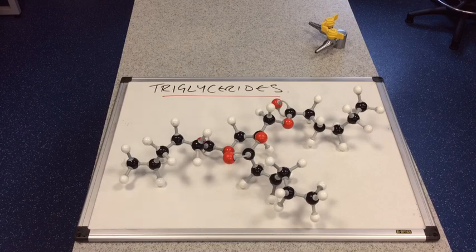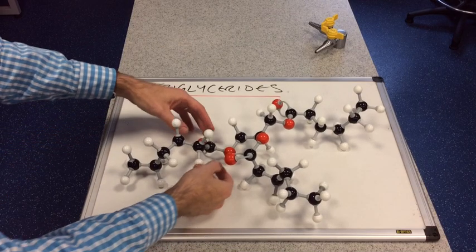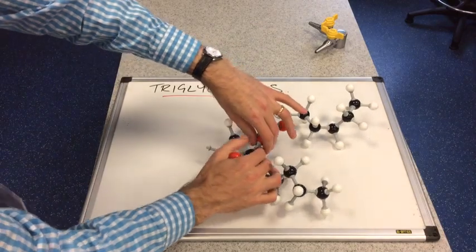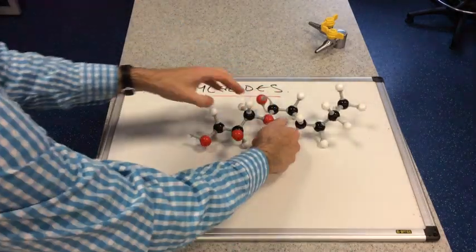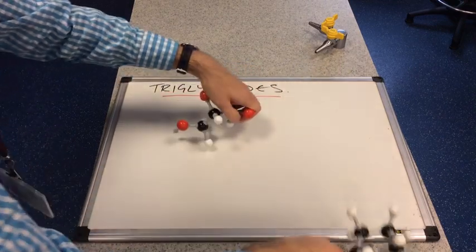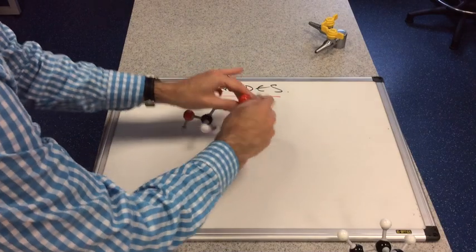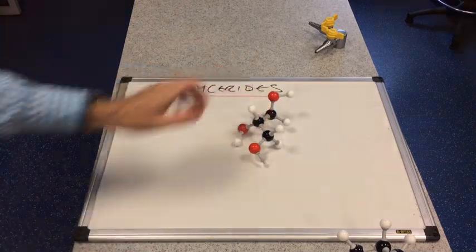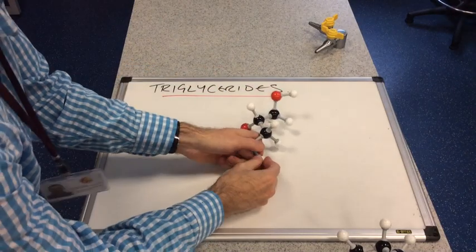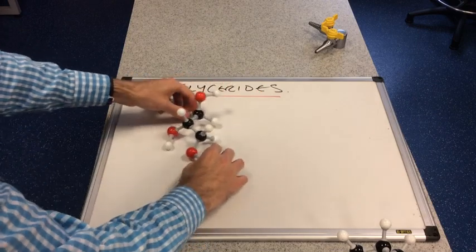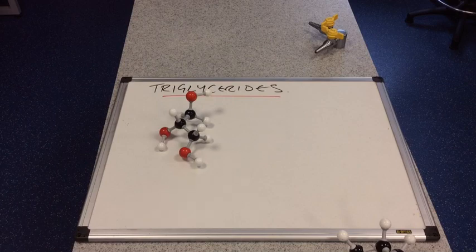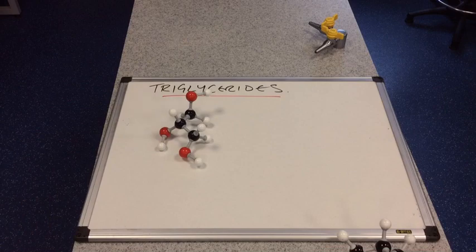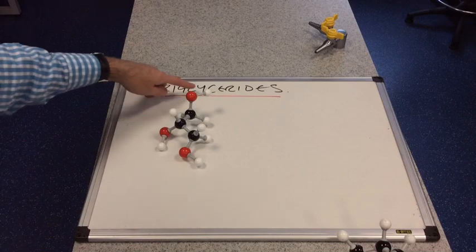Now the backbone of this ester is an alcohol. It's actually been made from an alcohol. So I'm just going to pull it apart a little bit and expose the alcohol. So we'll turn that into an alcohol with an OH on there. So we've got this alcohol with three OH groups on called propane 1-2-3-triol. Now that doesn't sound anything like triglyceride does it?